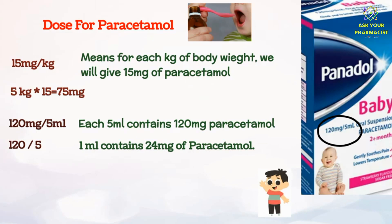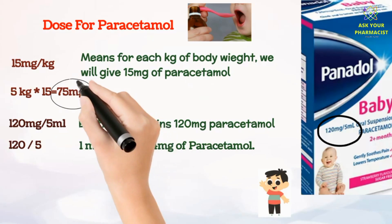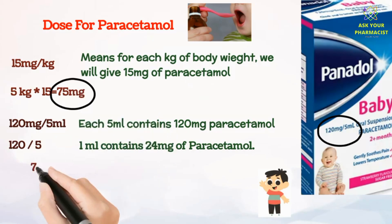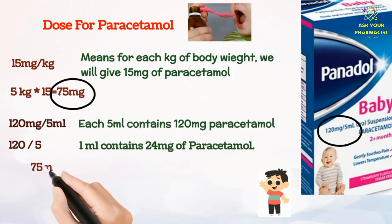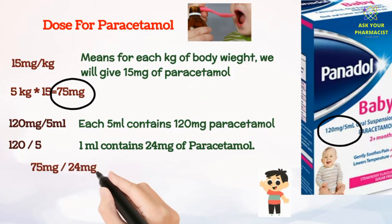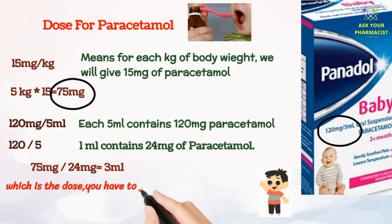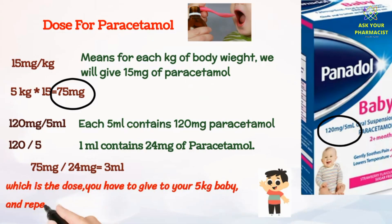As mentioned earlier, for a 5 kg weight the total dose is 75 mg. So dividing the total dose of 75 mg by the amount of paracetamol in 1 ml of syrup, which is 24 mg, you will get 3 ml. That is the dose to give to your 5 kg child, repeated after every 4 to 6 hours.